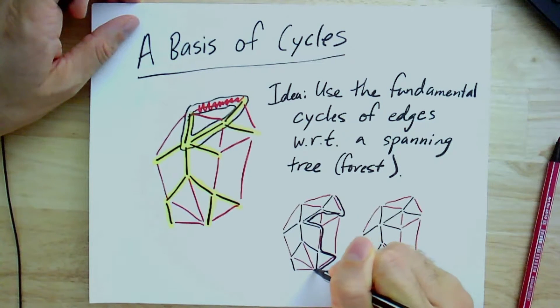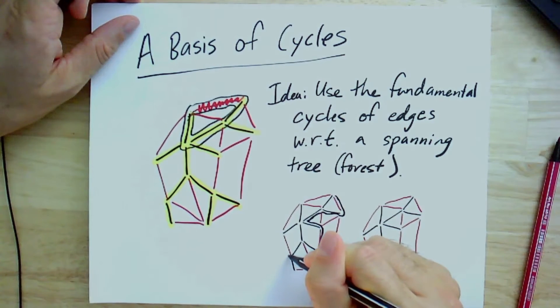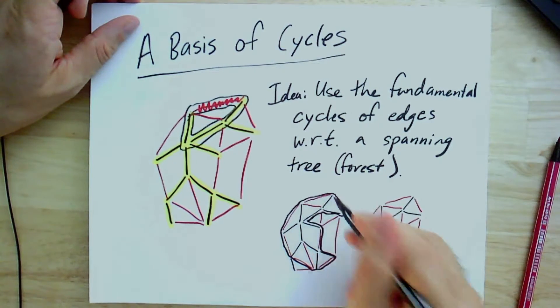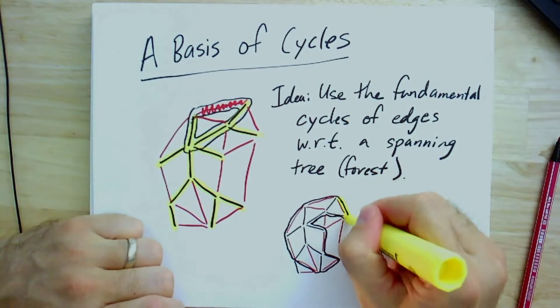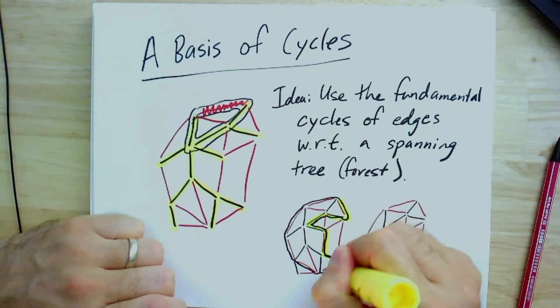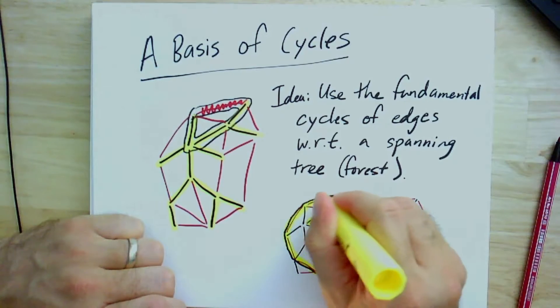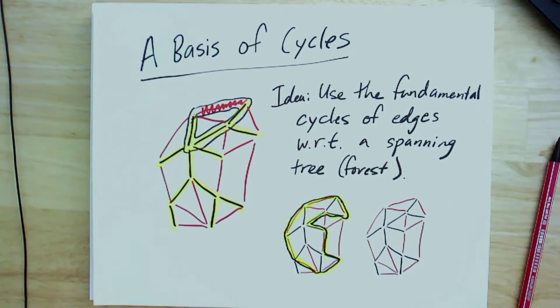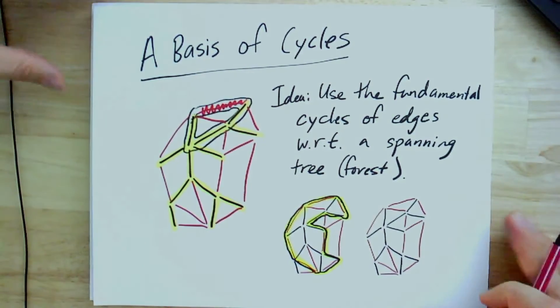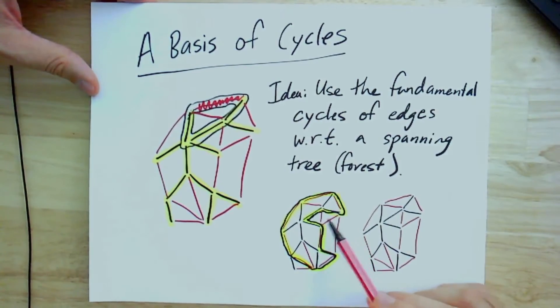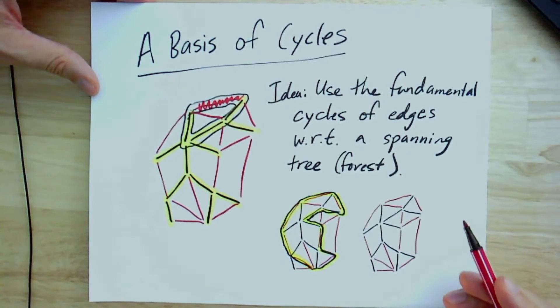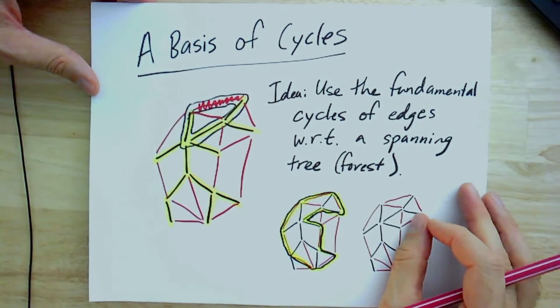So here is a cycle. I will highlight it. So that's a cycle in my graph. And what I would like to do is write it as the sum of these fundamental cycles. Now, as a cycle, some of the edges are in the spanning tree and some are not. I know they're not all in the spanning tree because the spanning tree doesn't have any cycles.